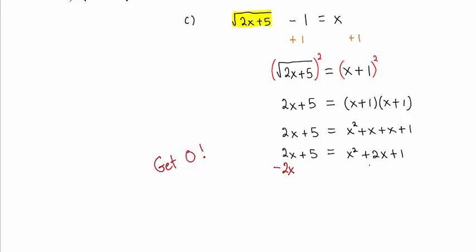We will subtract 2x and subtract 5. We do indeed now have 0 on the left-hand side of the equation. On the right-hand side, these two terms coincidentally added to 0, and we have x squared minus 4.